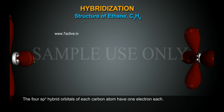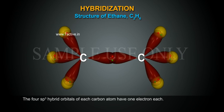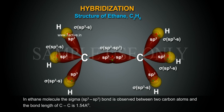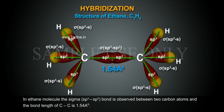The 4 sp3 hybrid orbitals of each carbon atom have one electron each. In ethane molecule, the sigma sp3-sp3 bond is observed between two carbon atoms and the bond length of C-C is 1.54 angstroms.